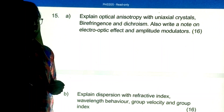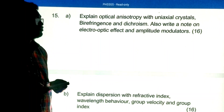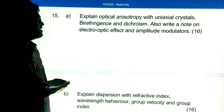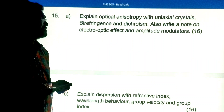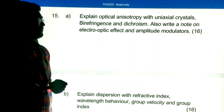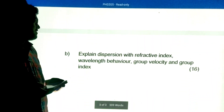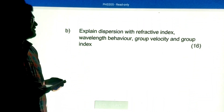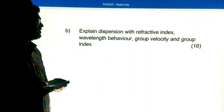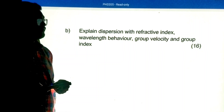Part B, Unit 5 important questions: Explain optical anisotropy with uniaxial crystals, birefringence, and dichroism. Also write about the electro-optic effect and amplitude modulators. Explain dispersion with refractive index, wavelength behavior, group velocity, and group index. These are 4-mark sub-parts forming a 16-mark question.